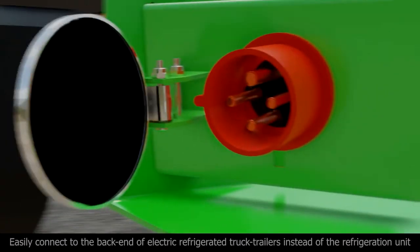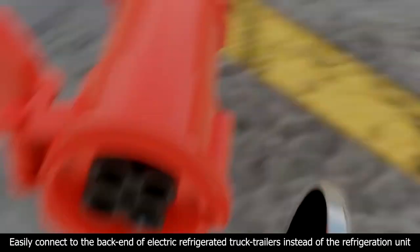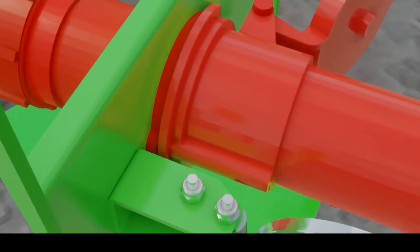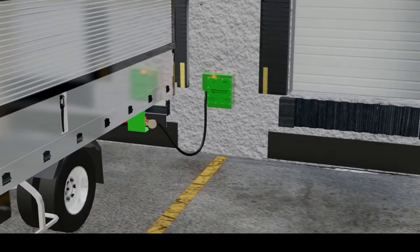ESL's truck trailer kit allows the user to easily connect to the back end of electric refrigerated truck trailers instead of the refrigeration unit, providing a shorter connection distance. This closer connection helps prevent tripping hazards and cable damage that may occur with longer connections.